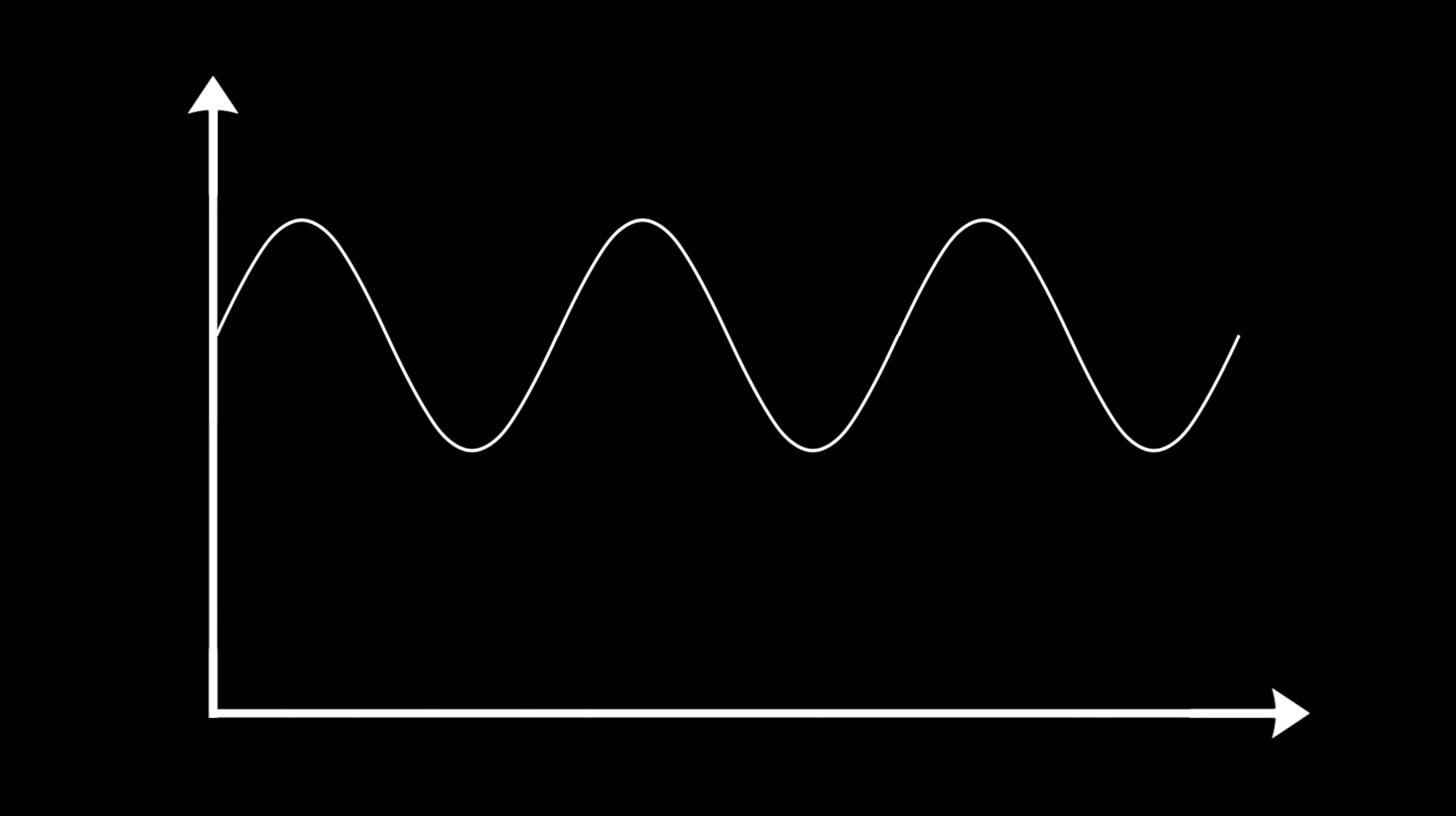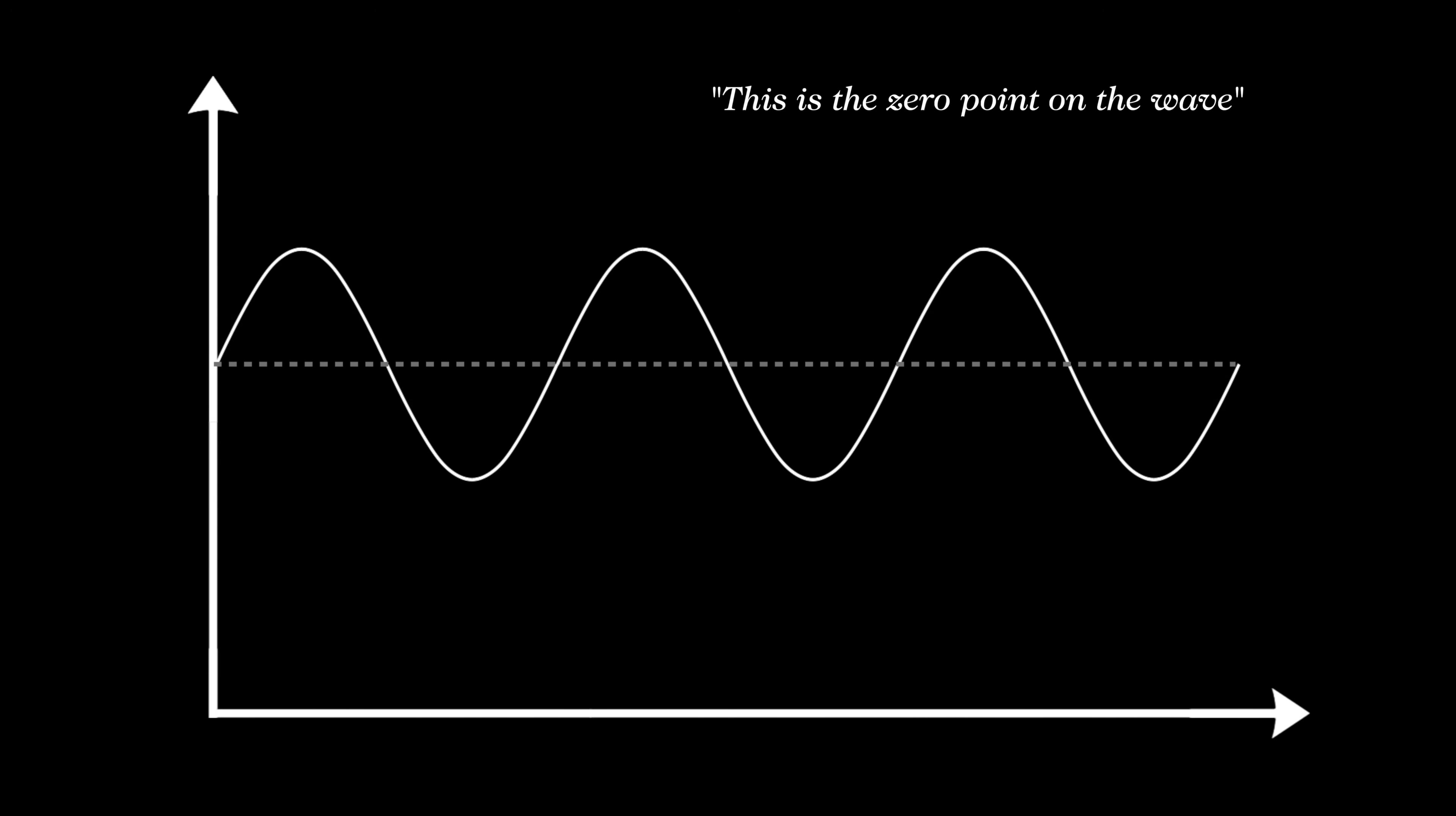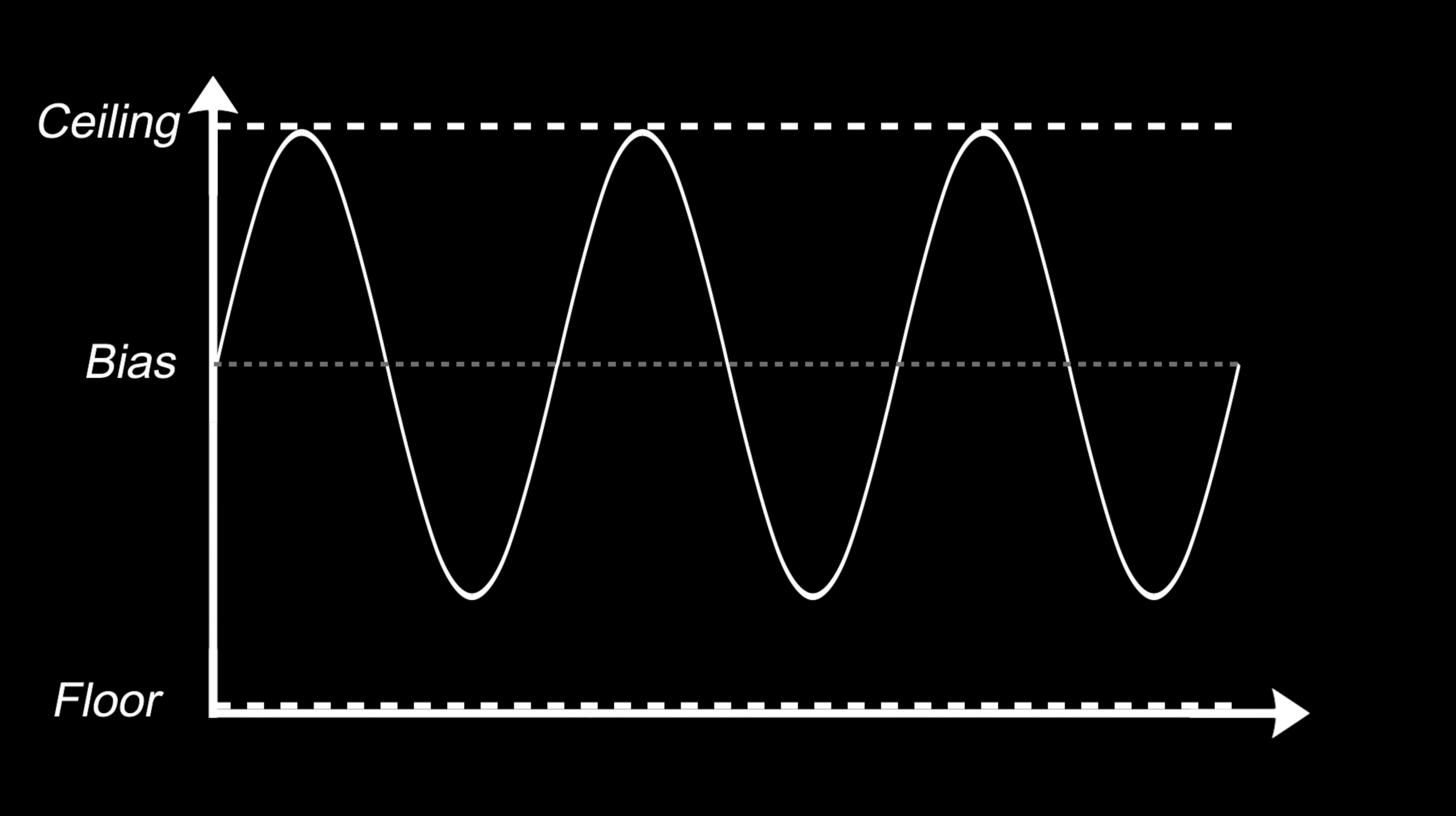In fact, what a lot of people call the tube sound is really just asymmetry. And this is due to the fact that with tubes, you need to set a level where you say, this is the zero point on the wave. This level is called the bias. And if the bias isn't set in the middle of its operating range, which is how lots of tube amps are calibrated, you get asymmetric distortion.